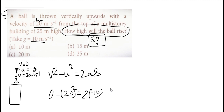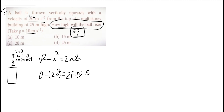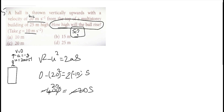We have negative acceleration. Now doing the numerals: 20 squared equals 400, equal to 2 into minus 10 into minus S. Minus and minus cancel. So 400 equals 20S, therefore S equals 20 meters. Option C.